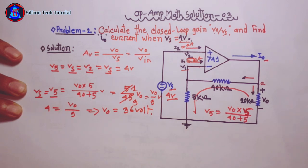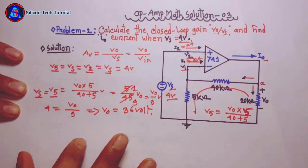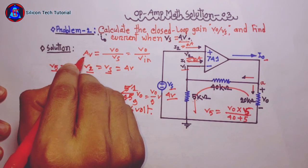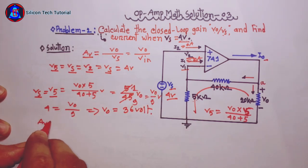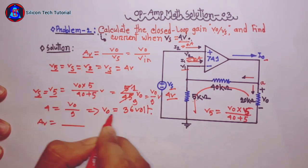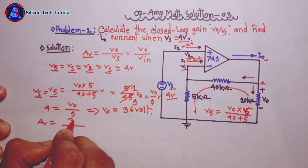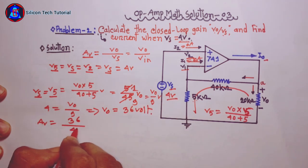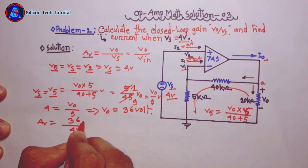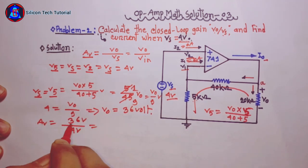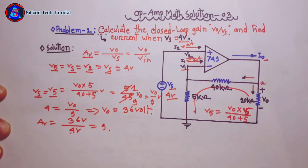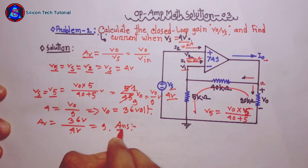So we can calculate the closed-loop gain A. Output voltage is 36 and input voltage is 4, giving a gain of 9. So this is the answer.